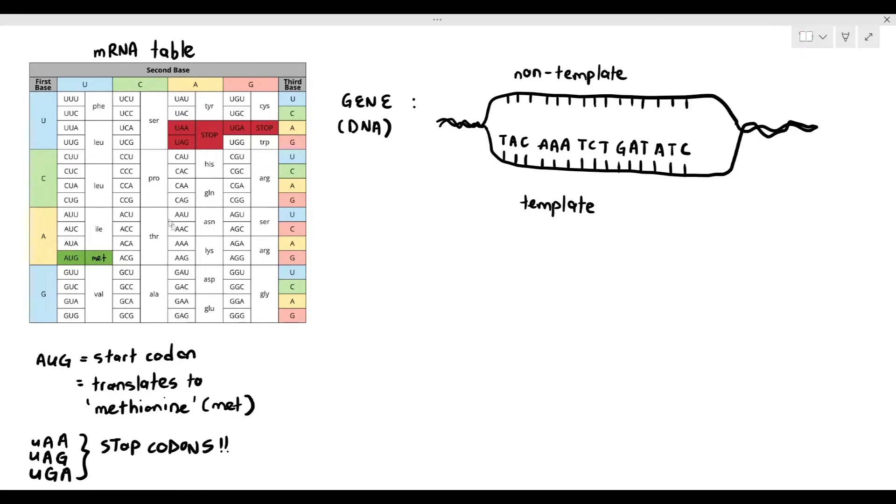Now, remember, when transcription happens, which strand is chosen? Is it the non-template strand or the template strand? Yes, it has to be the template strand. So, let's form the complementary base pairings for the mRNA. Notice, when the sequence is TAC, the RNA has to be AUG, not ATG. Because remember, RNAs do not have thymine, they have uracil instead.